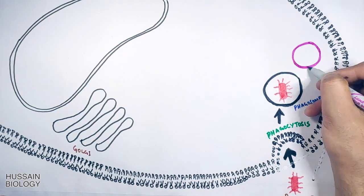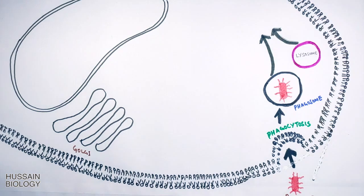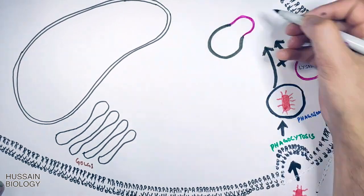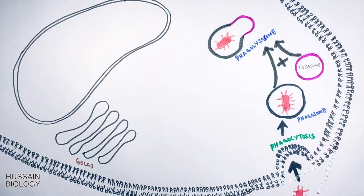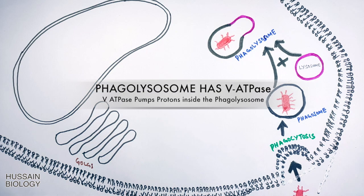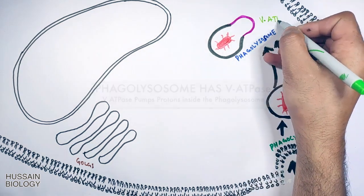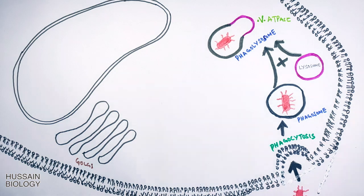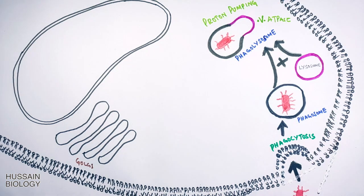Then in the next step the lysosome within the cell fuses with phagosome and we get the phagolysosome. And we know in phagolysosome the protons are pumped inside it by the help of V-ATPase pumps. By this the pH is lowered within the phagolysosome. The lower pH means acidic medium.